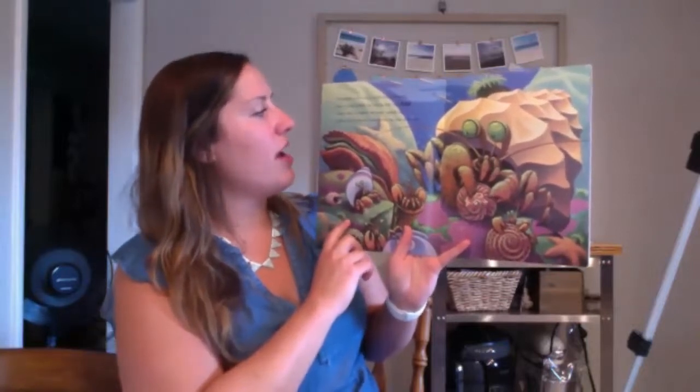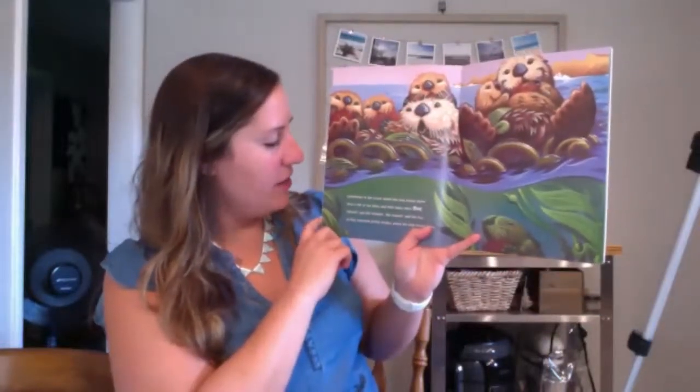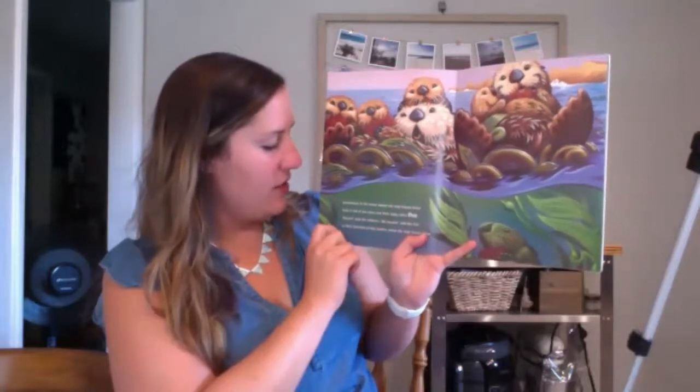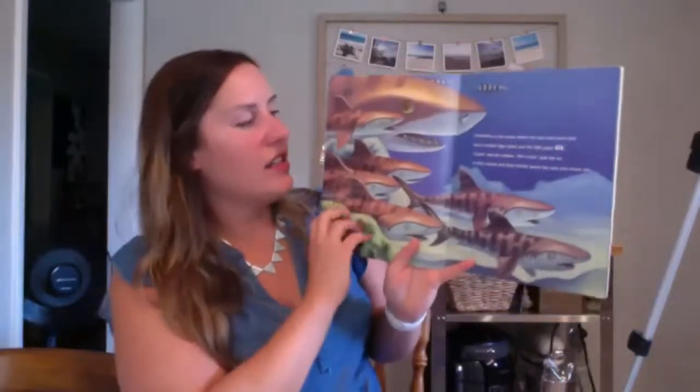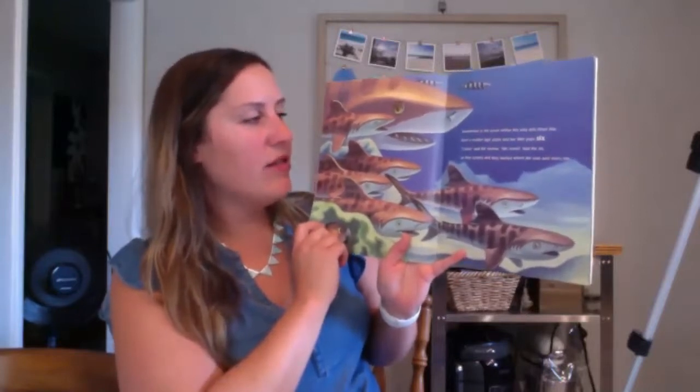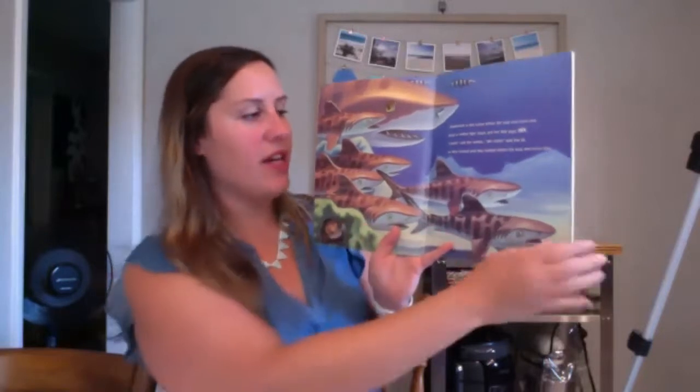Somewhere in the ocean, in a tide pool by the shore, lived a mother hermit crab and her baby crabs four. Dress, said the mother. We dress, said the four. So they tried on different shells in their tide pool by the shore. Somewhere in the ocean where the kelp forests thrive, lived a raft of sea otters and their baby otters five. Munch, said the mother. We munch, said the five. Somewhere in the ocean where the seas and rivers mix, lived a mother tiger shark and her little pup six. Cruise, said the mother. We cruise, said the six.